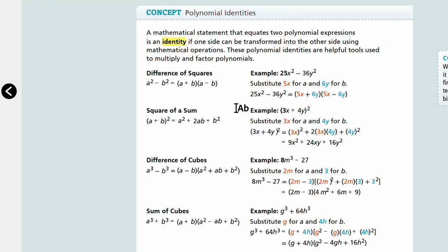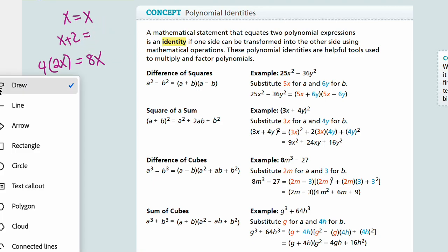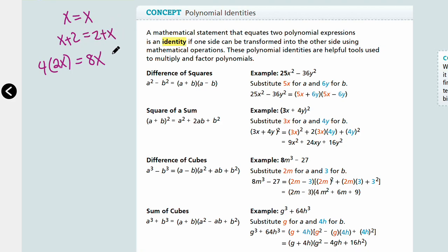These polynomial identities are helpful tools used to multiply and factor polynomials. So what is an identity? Identity is anything that equates to itself. So in math, you can say that, for example, x is equal to x, or x plus 2 is equal to x plus 2. What about 2x times 4 is equal to 8x? So these kind of things. Or we can say that x plus 2 is equal to 2 plus x. So even though the expressions may look different, if they're equal to each other, we can call them identity. Okay? So basically, identity is anything that is itself.